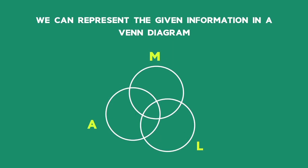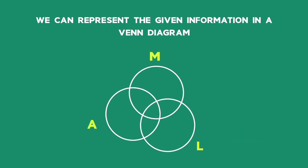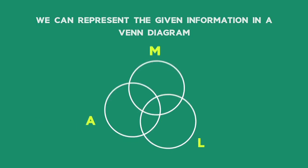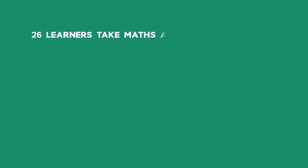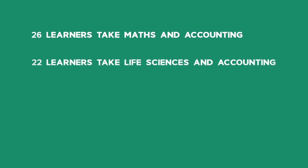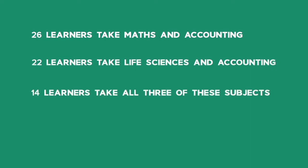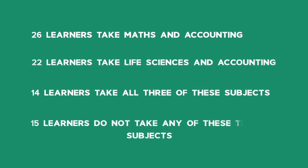For Part 1, we can represent the given information in a Venn diagram, with L for Life Sciences, M for Maths, and A for Accounting. The rectangle around the circles represents all the learners in Grade 12 at Takalani High School. We are also told that 26 learners take Maths and Accounting, 22 take Life Sciences and Accounting, 14 learners take all three subjects, and 15 learners do not take any of these three subjects.